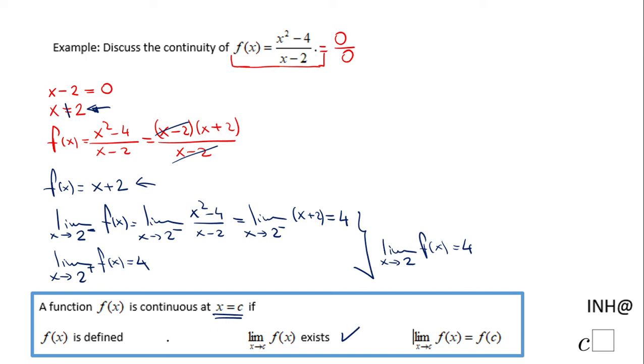The problem is the function is not defined—it's still not defined at 2. Obviously, this condition also is not accomplished since the function is not defined at 2. So we can say f of x is not continuous at x equals 2. That is the justification.